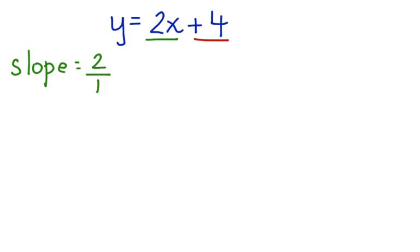Because slope is the relationship of rise over run, we can put the whole number 2 over 1 to make it a little easier to graph. And our y-intercept is positive 4.